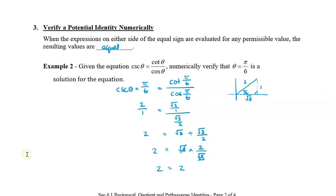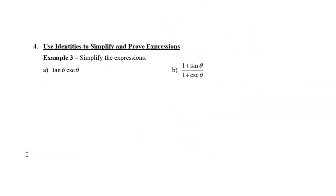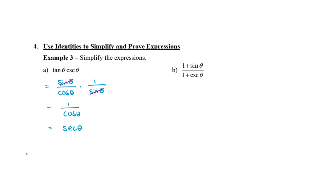Next, let's look at using identities to simplify expressions. For the first expression, tan theta times cosecant theta: tan theta equals sine theta over cosine theta, and cosecant theta equals 1 over sine theta. Multiplying these, the sine thetas cancel and we're left with 1 over cosine theta, which simplifies to secant theta.